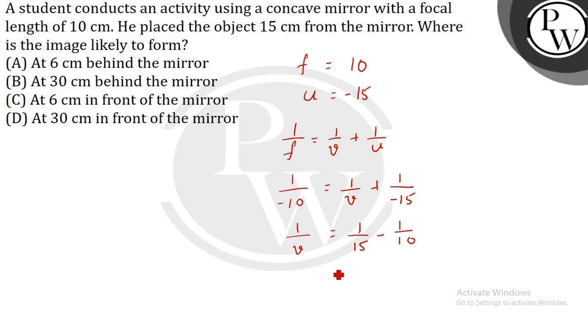Or 1/v is equal to minus 1/30, or v equals minus 30 centimeters.